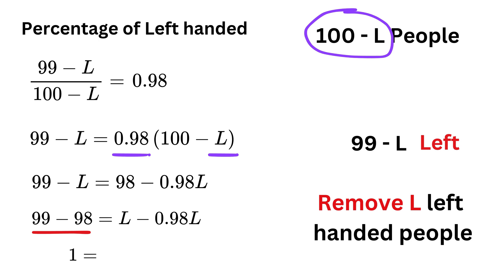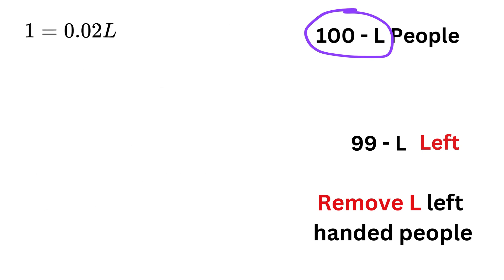This will become 1, and this will be 0.02 times L. This is the same as 2 over 100 in decimal form, and thus L equals 100 over 2, or 50.